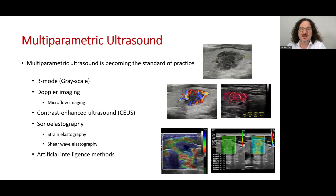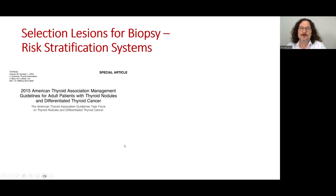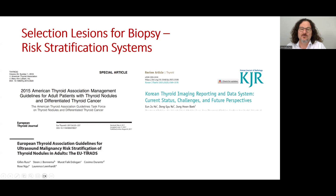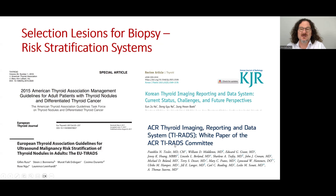Multiparametric ultrasound is becoming the standard of practice for nodule evaluation, which includes B-mode, Doppler imaging, microflow imaging recently introduced, contrast-enhanced ultrasound, sonoelastography — strain or shear wave — and artificial intelligence methods. The first risk stratification system defined is the ATTA guideline, followed by Korean, followed by European thyroid and American College of Radiology TIRADS systems.